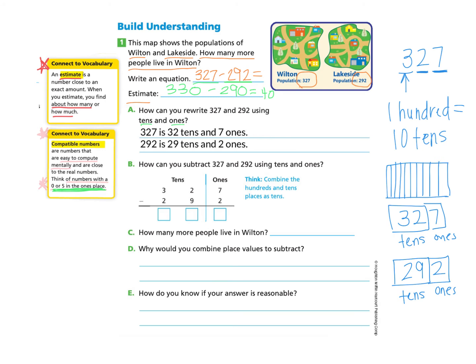Now let's take a look at part B. How can you subtract 327 and 292 using the tens and ones? Think combined the hundreds and tens places as tens. The first step we will do is subtract the ones column, which is seven take away two, and that gives us five left over. And then we will subtract the 32 from the 29. And we will find that we have three tens left over.